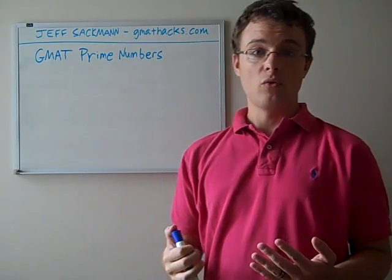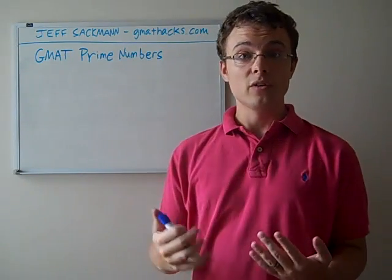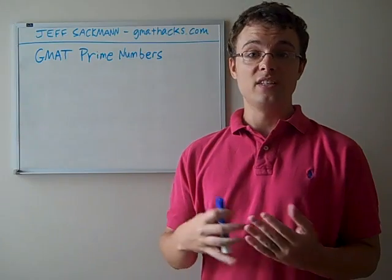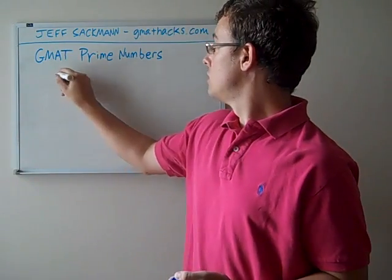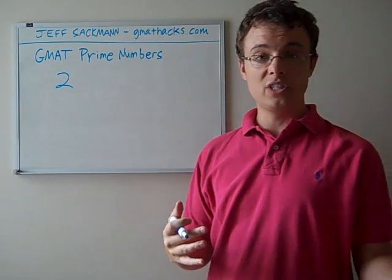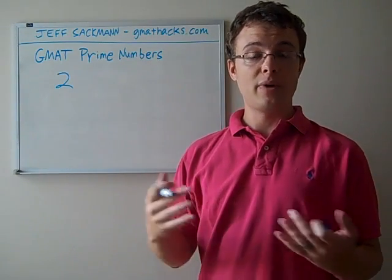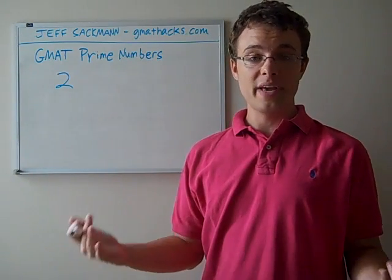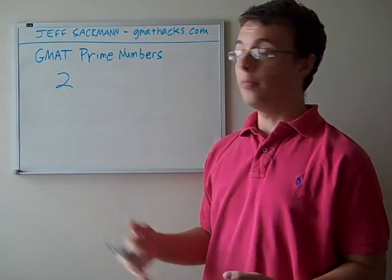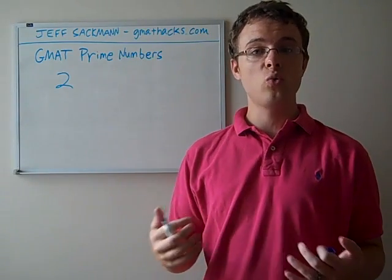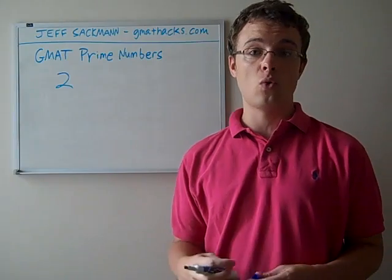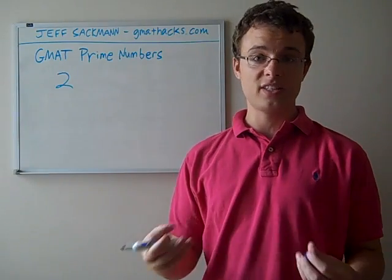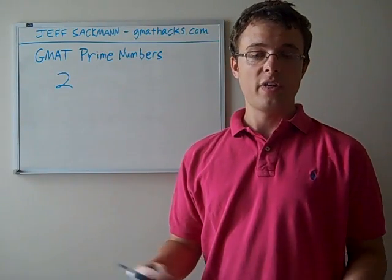So, first point of order is, what is a prime number? A prime number is a number that is divisible only by 1 and itself. So for instance, 2 is a prime number. 2 is divisible by 2, it's divisible by 1, but it's not divisible by anything else. If you try to divide 2 by 3, or by 7, or by 12, you end up with something other than an integer, something other than a whole number. You end up with a fraction, a decimal, something other than an integer.